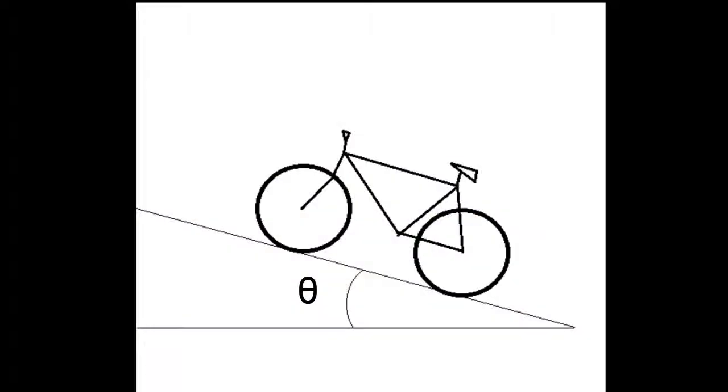Since we have all the constant values, we can now approximate what the force exerted on a bicycle would be if it was going at 1, 10, or 100 meters per second without having to repeat the experiment.